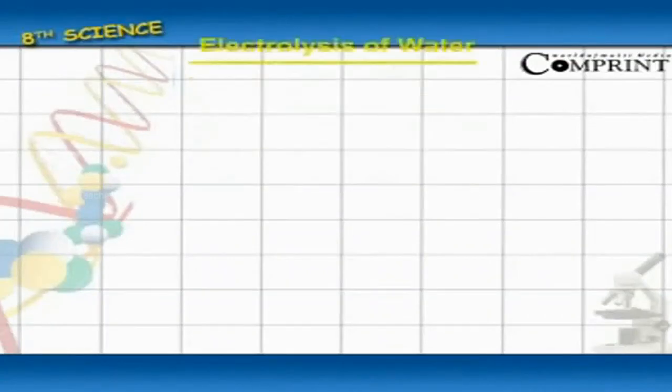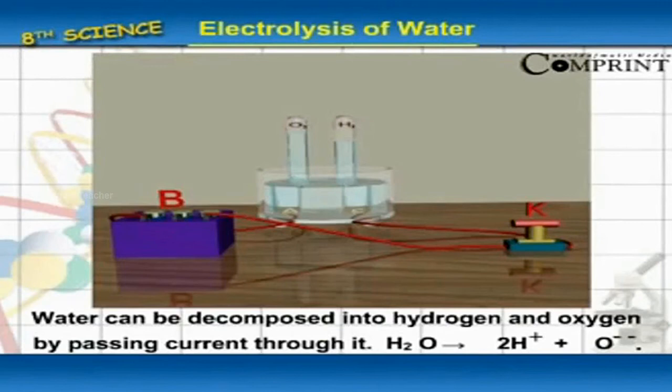Electrolysis of Water. Water can be decomposed into hydrogen and oxygen by passing current through it.